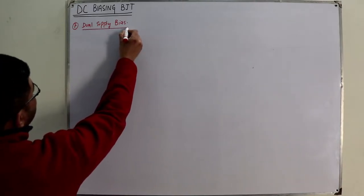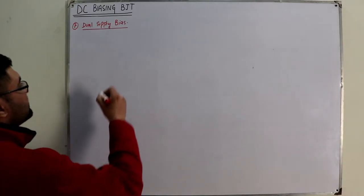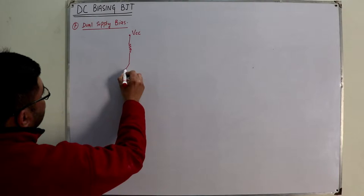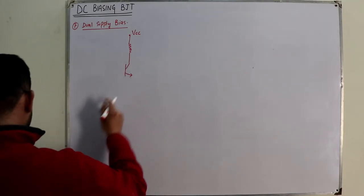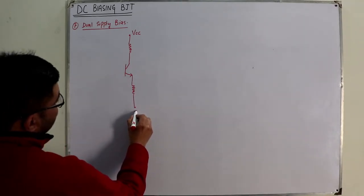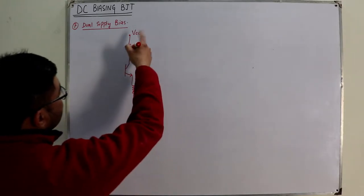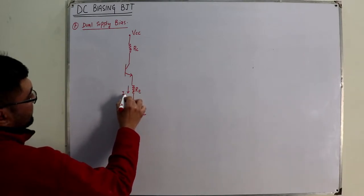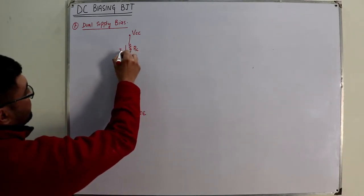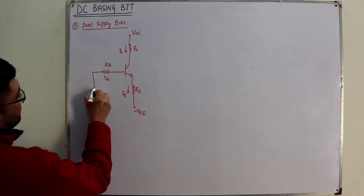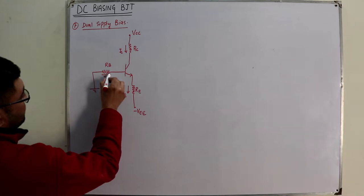Now what does this mean? We would have two supplies. We have our VCC, the collector resistance RC, and the emitter resistance RE. Over here we have a negative VEE. The current IE flows through RE, IC through RC. We have base resistance RB, with current IB through it. And this is grounded.